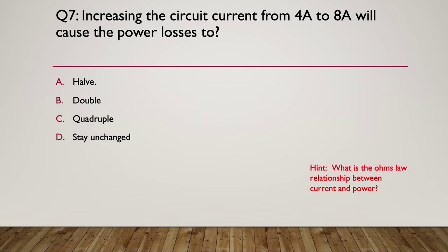Here's your hint: what is the Ohm's Law relationship between current and power? Get out your Ohm's Law wheel and look at that relationship. The answer is C: it's a squared relationship, so doubling the current from four amps to eight amps will quadruple the power losses.